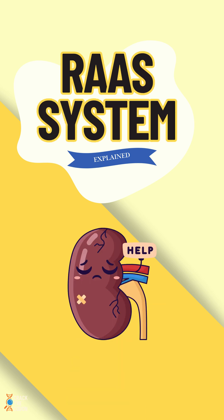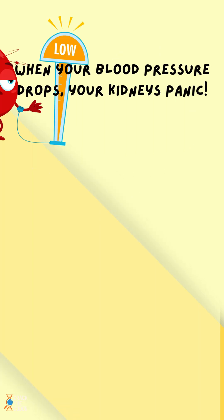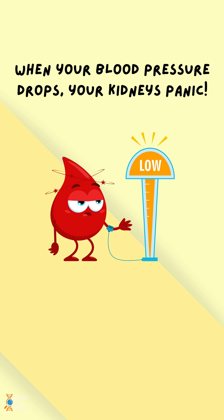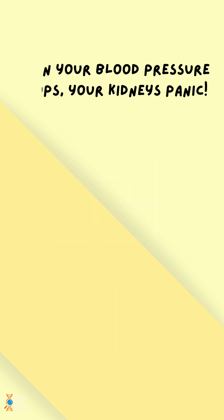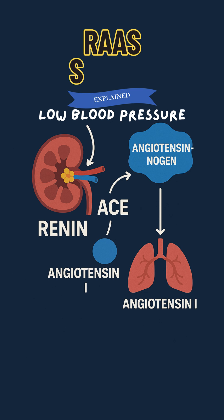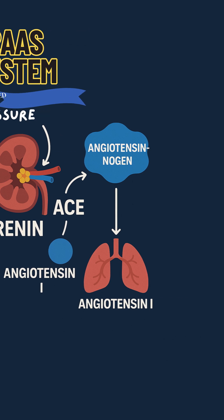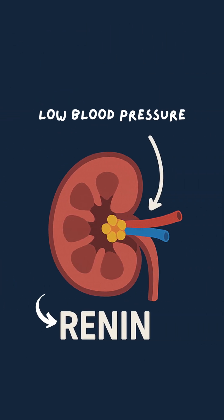Hi everyone and welcome to the RAS system. Let's get into it. When blood pressure drops, the kidneys respond with a complex regulatory system designed to restore balance. The first step involves release of renin from specialized cells in the kidney known as the JGA cells.